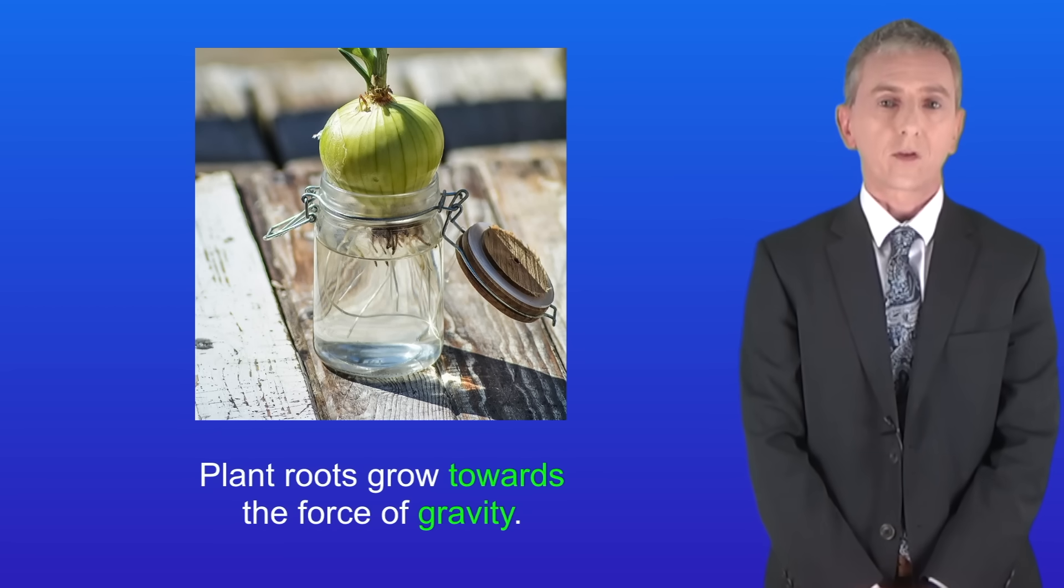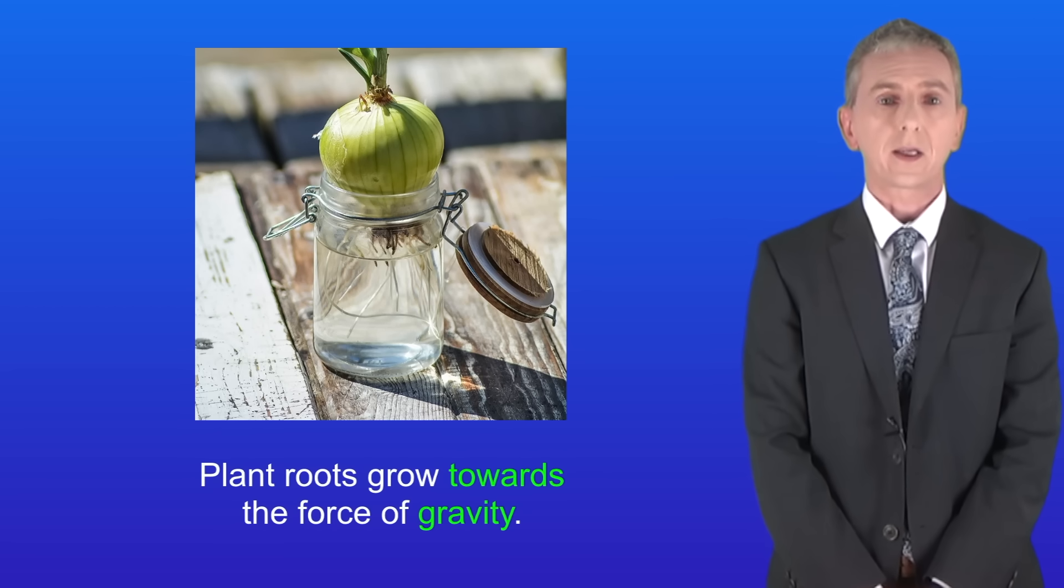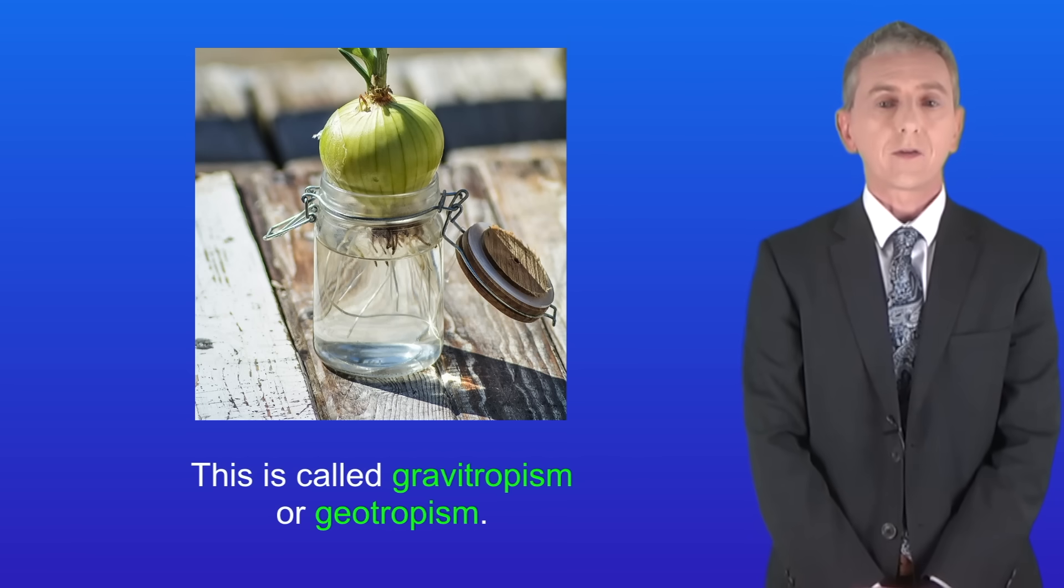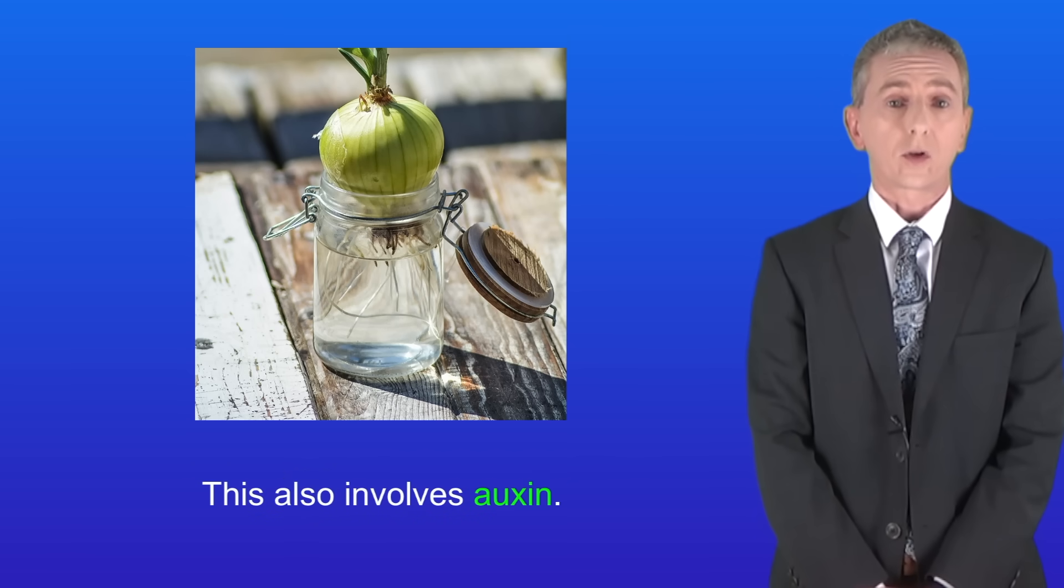Now plant roots grow towards the force of gravity, and I'm showing you that here. This is called gravitropism or geotropism, and this also involves auxin.